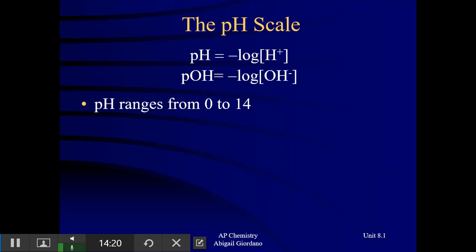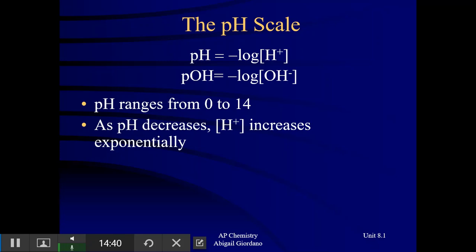Traditionally you've learned that pH ranges from 0 to 14. Technically, you can have pH's below 0 and above 14 — that does exist — but most of our answers will fall in that range. As pH decreases, things become more and more acidic, meaning the hydrogen ion concentration is increasing — not linearly, but exponentially. Logarithms are an exponential relationship, and it's really important that you understand that.